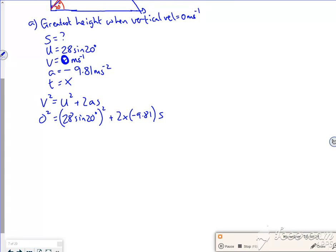So two lots of 9.81, that's 19.62. If I take that on the other side, 19.62S equals 28 sine 20 all squared. So S would be 28 sine 20 all squared divided by 19.62. That gives me 4.67 meters.